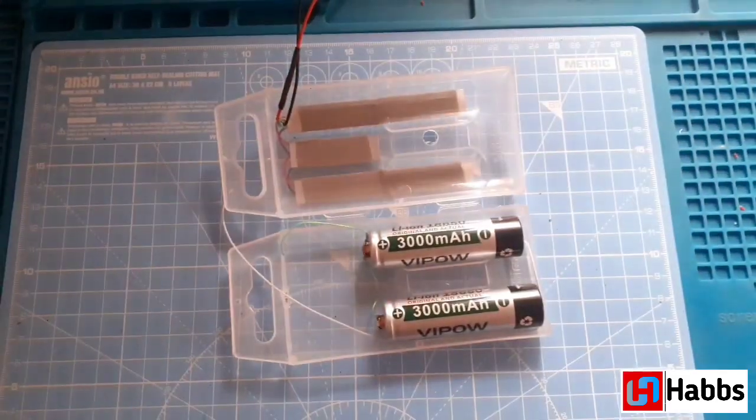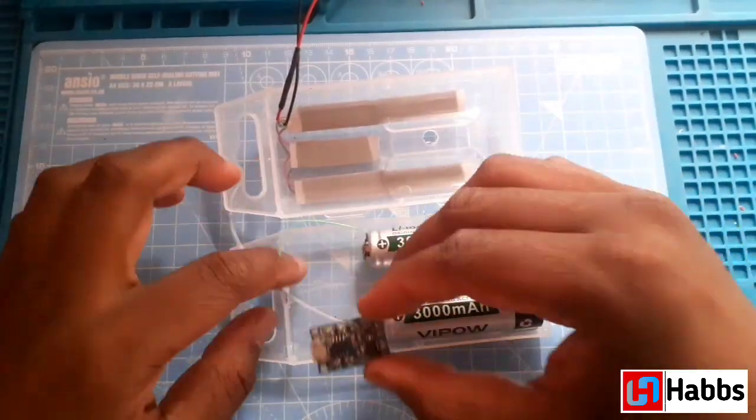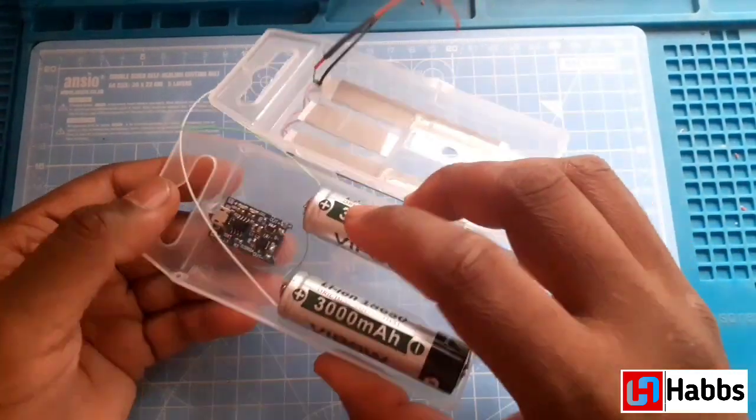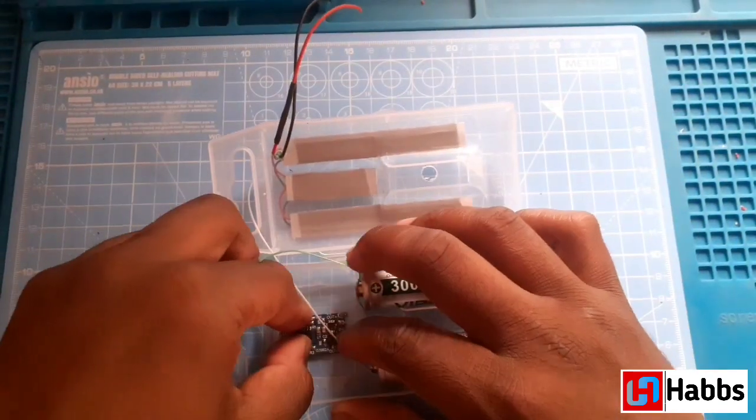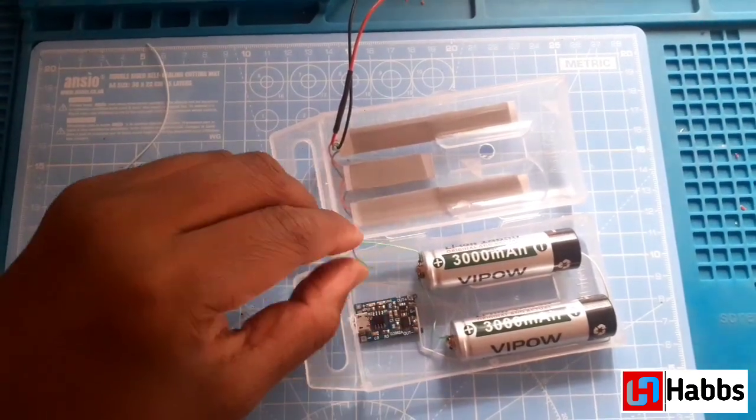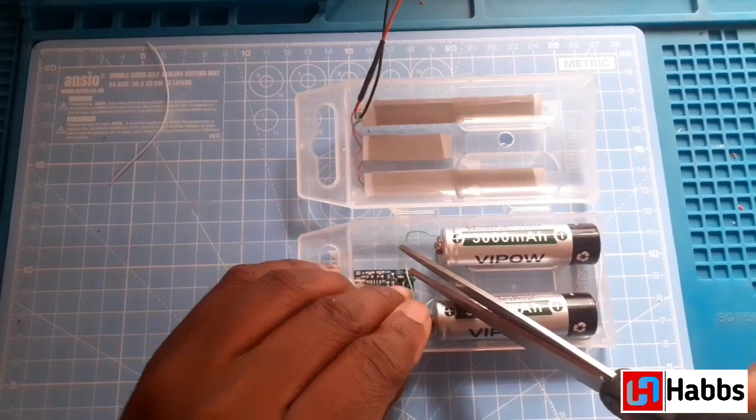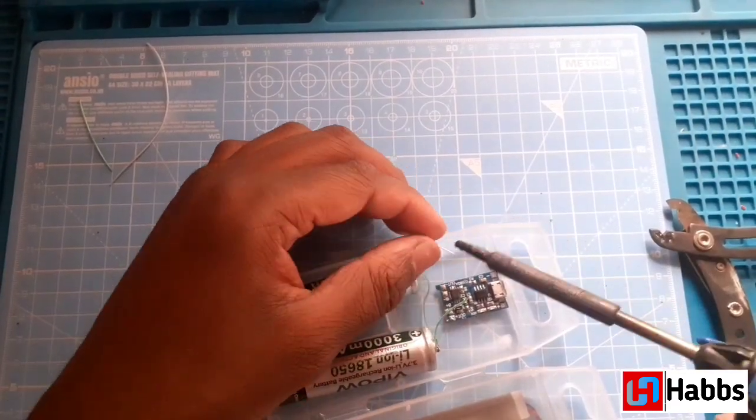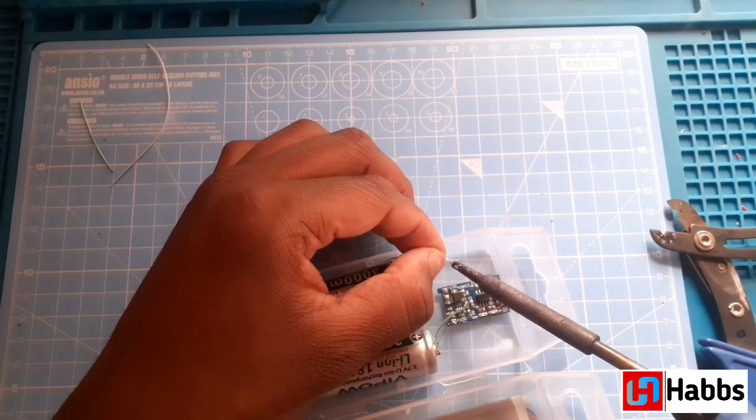Next we need a charging module. We will stick the charging module using a double sided tape exact to the charging port which we had drilled earlier. The positive terminal of battery is connected to the positive of charging module and the negative terminal of battery is connected to the negative of charging module.